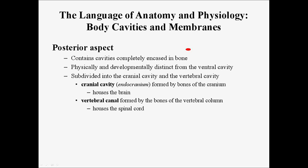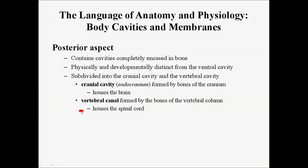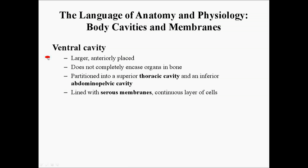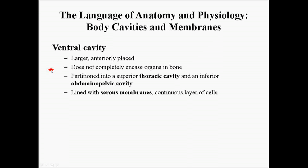In the posterior aspect, it contains cavities completely encased by bone. They are physically and developmentally distinct from the ventral cavity. They can be subdivided into the cranial cavity and the vertebral canal. The cranial cavity houses the brain, whereas the vertebral canal houses the spinal cord. The ventral cavity is much larger and anteriorly placed, that is towards the front of the body, but it does not completely encase organs in bone. It is separated into the thoracic cavity and the abdominal pelvic cavity by the diaphragm.